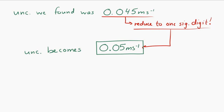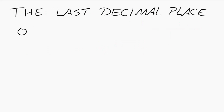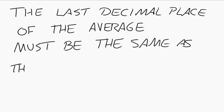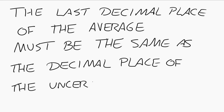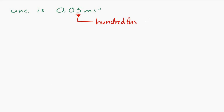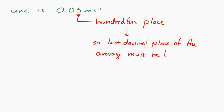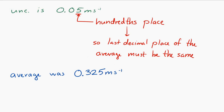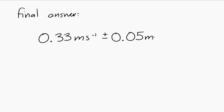So we have an uncertainty and we have an average. The second big rule is that the last decimal place of the average must be the same as the decimal place of the uncertainty. The decimal place of our uncertainty is the hundredths place — we have 0.05 meters per second, and five is in the hundredths place. So our average becomes 0.33 meters per second. The final answer is 0.33 meters per second plus or minus 0.05 meters per second. That is the average and the uncertainty in the average.